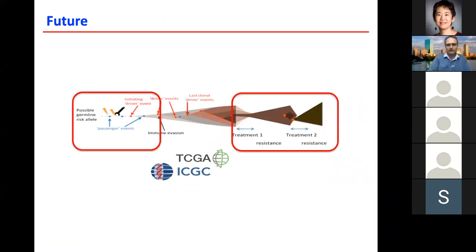So just now I want to summarize this with what is the future, where are we going now? So TCGA and ICGC focused on primary tumors. Most of them were previously untreated.